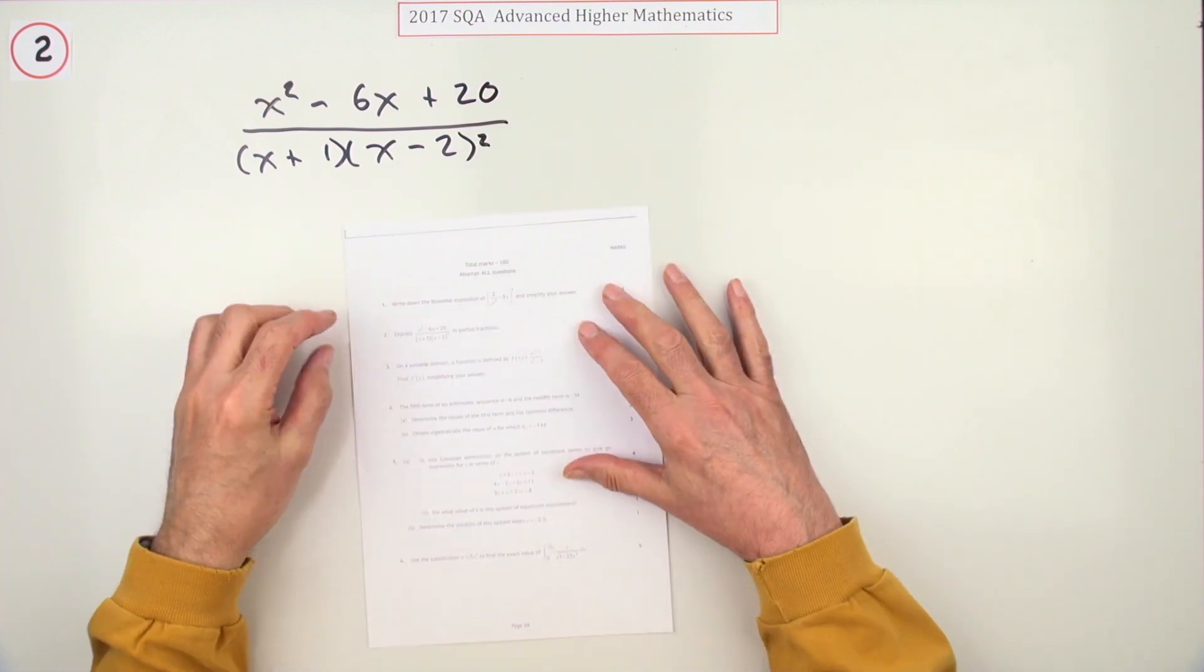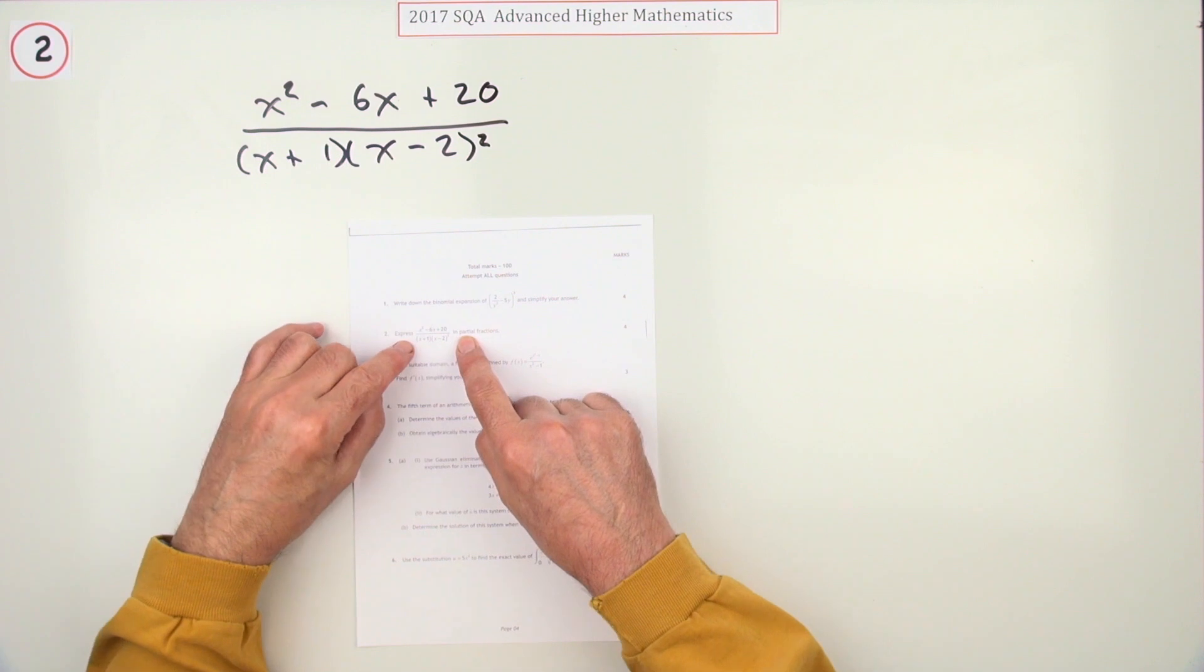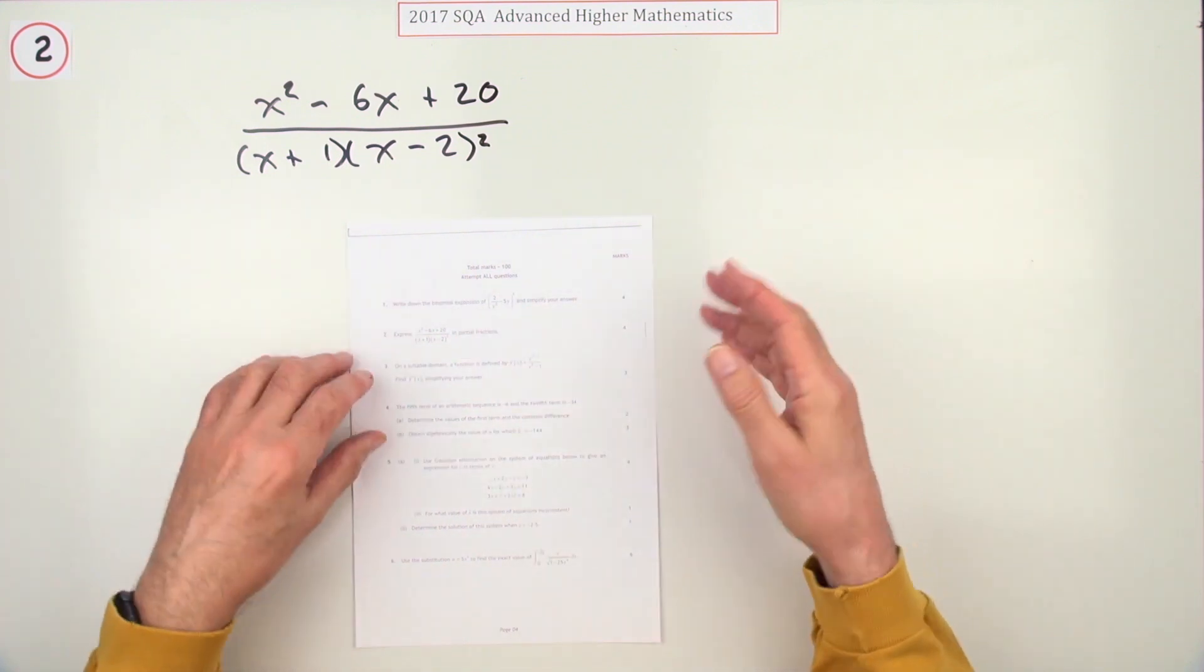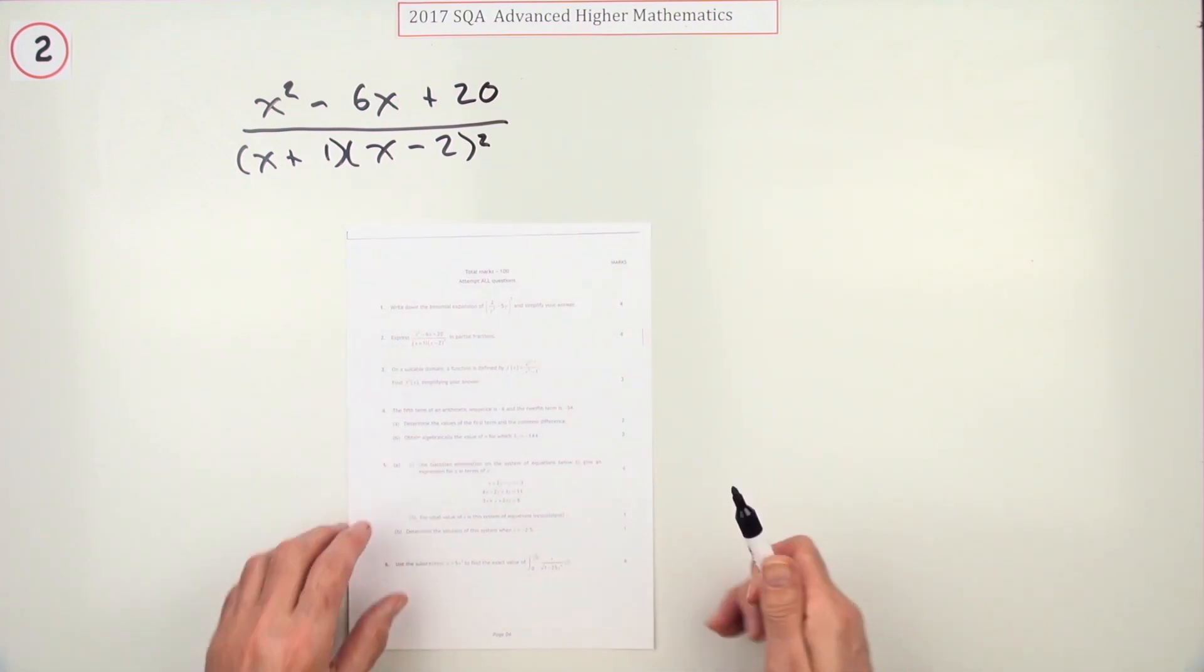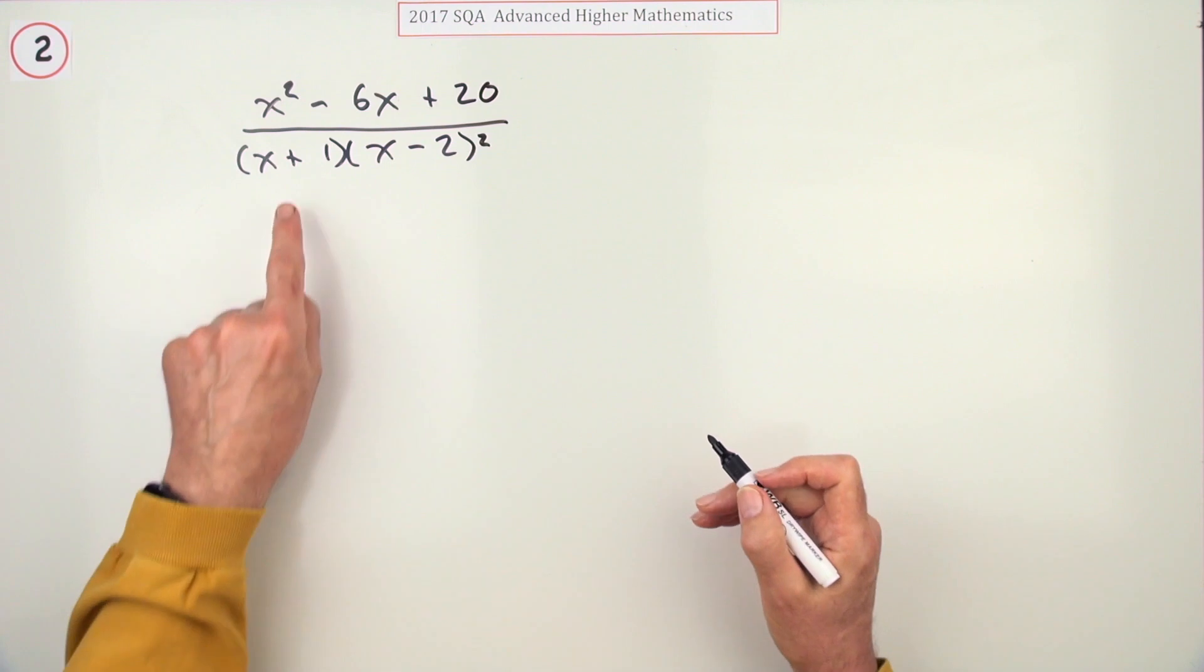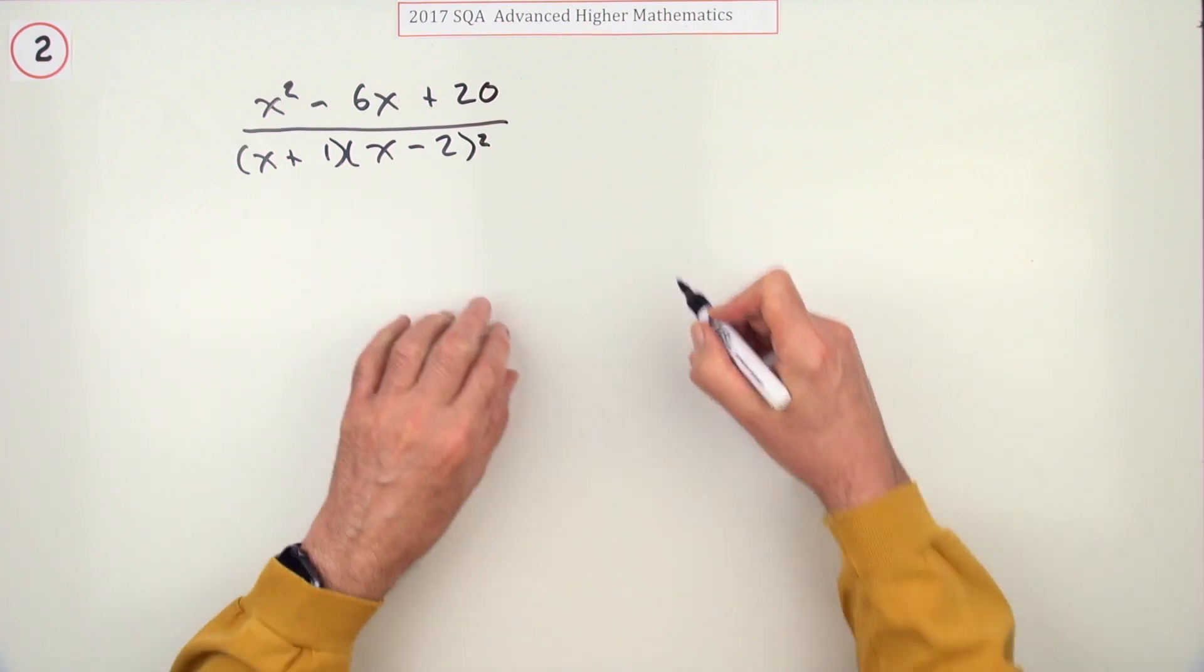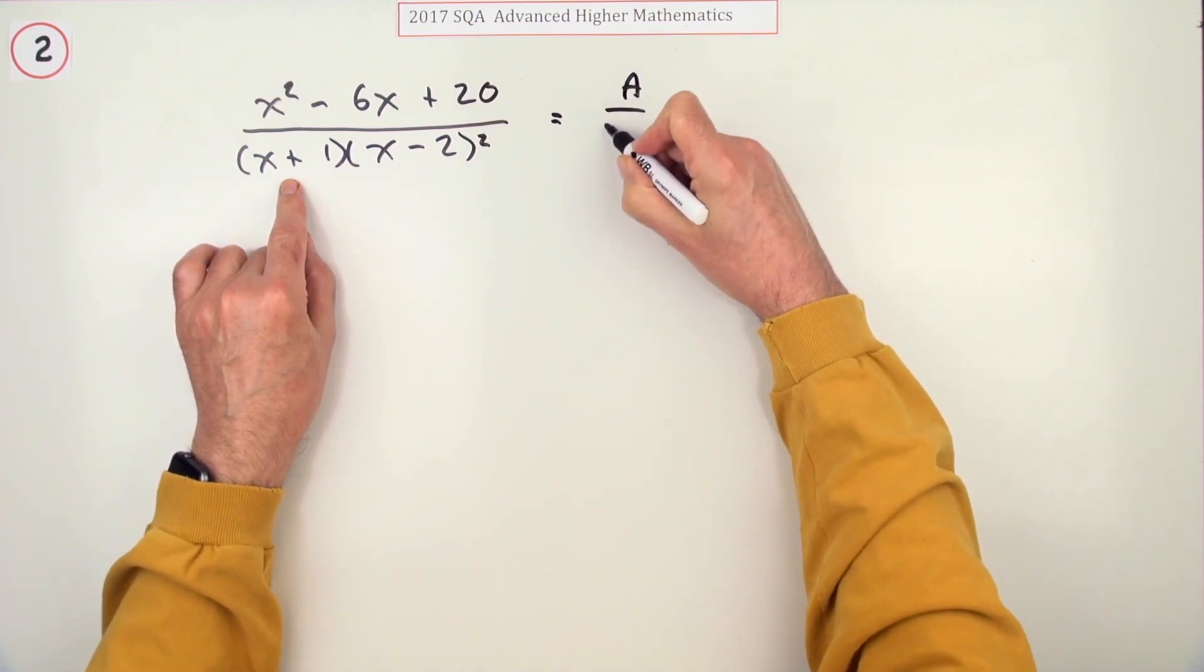Number two from the 2017 Advanced Higher Maths. Partial fractions, four marks. Seeing partial fractions here means probably you're not going to get one later on in an integral which could have been worth more marks, but you should still get these four marks quite easily. What have we got? Well, there are two linear denominators but one of them is a repeated one, so don't forget to have this one down twice.